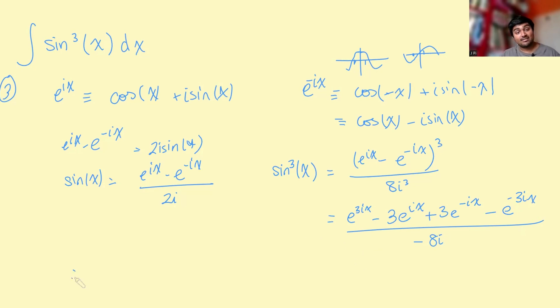And this is just sine cubed x. And so therefore, the integral of sine cubed x dx is going to be 1 over minus 8i times, the integral of 3ix. What's that? Or e to the 3ix. That's just going to be 1 over 3i e to the 3ix. What about this one here? That's just going to be minus 3 over i e to the ix. How about this one here? That's going to be plus 3 over minus i e to the minus ix. And this last one here is going to be minus 1 over minus 3i e to the minus 3ix. And then, of course, plus c.